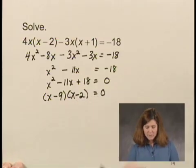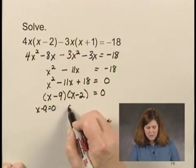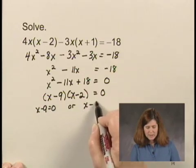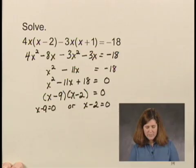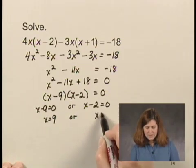That equals zero. So either x minus 9 equals zero or x minus 2 equals zero, which means that x must be 9 or x must be 2.